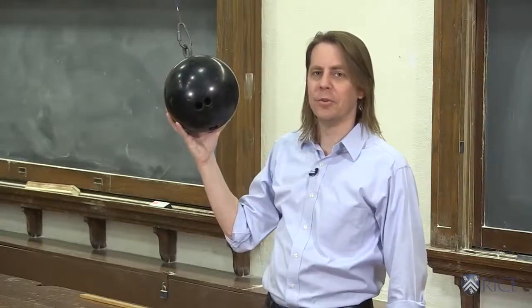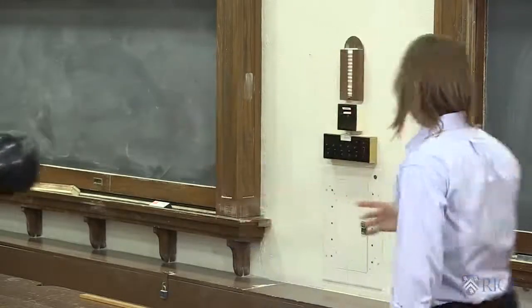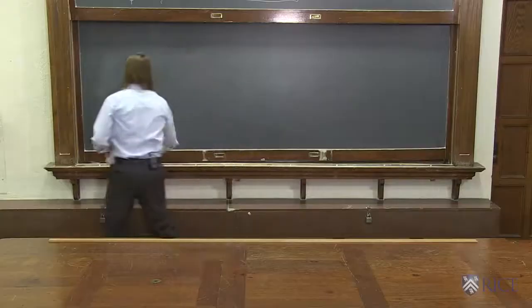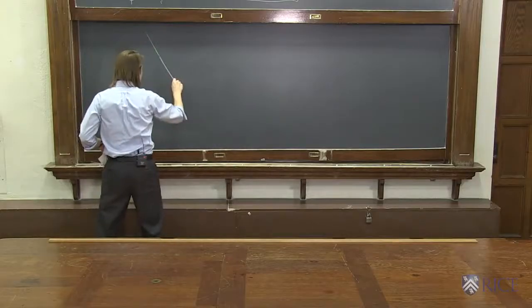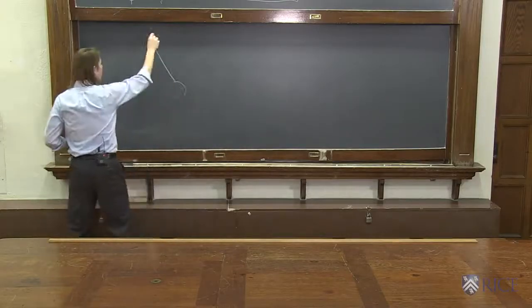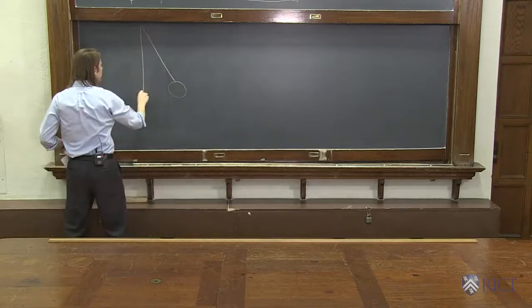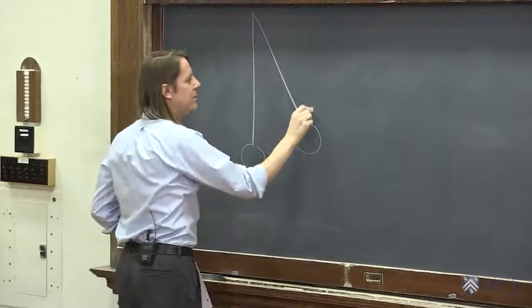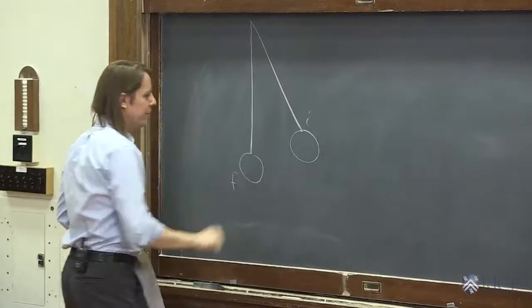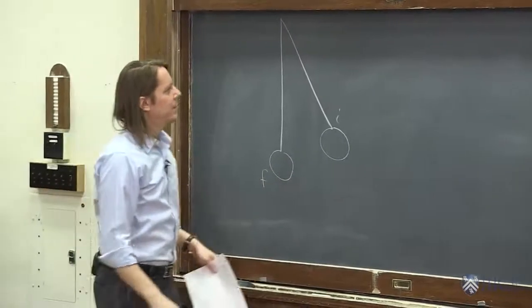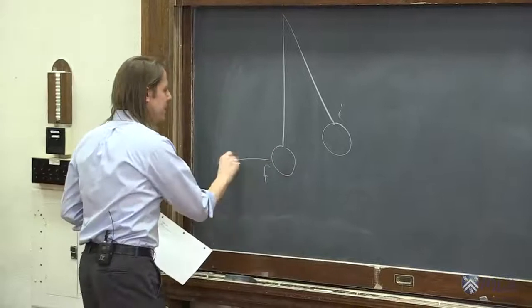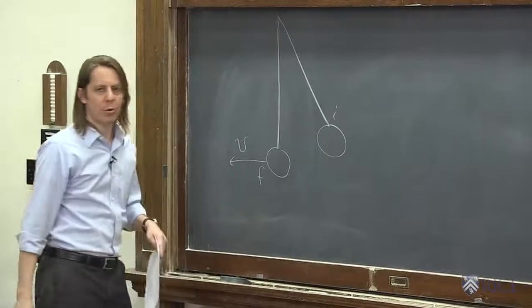Let's test our conservation of energy formulas with the bowling ball. What we're going to do is let it swing from here. We're going to hold it still and let it swing to here. This is going to be the initial state. This is going to be the final state. So the question is, at the end, how fast will the bowling ball be going?